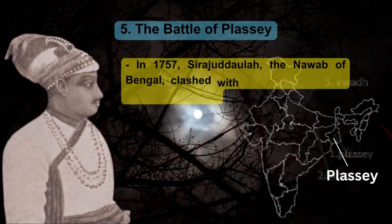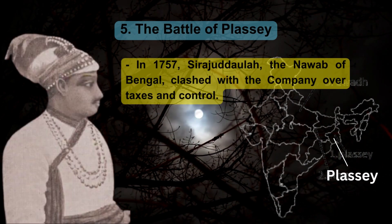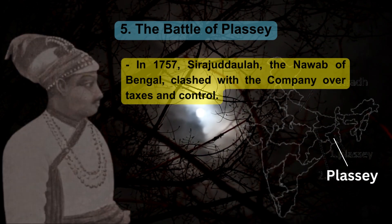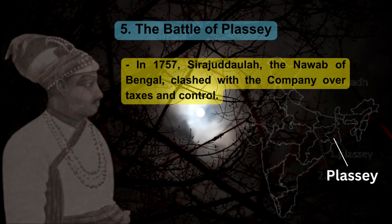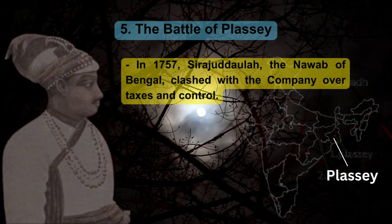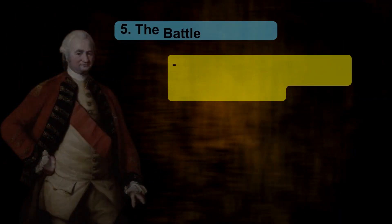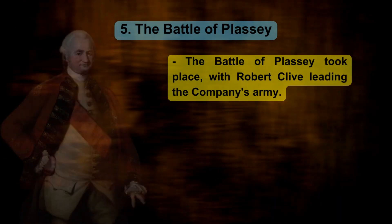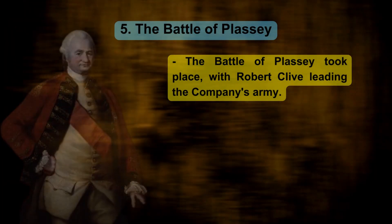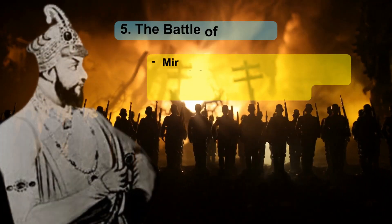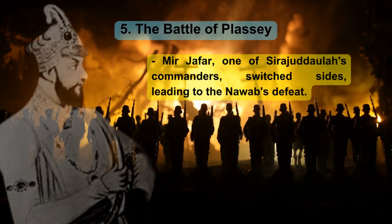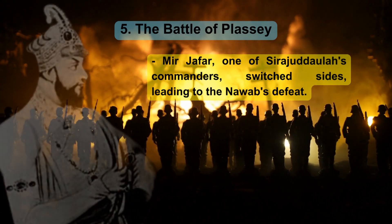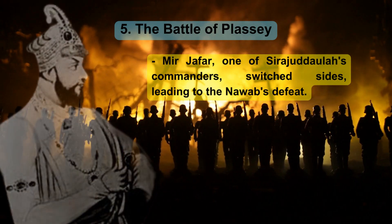The Battle of Plassey. In 1757, Sirajud Daulla, the Nawab of Bengal, clashed with the company over taxes and control. The Battle of Plassey took place, with Robert Clive leading the company's army. Mir Jafar, one of Sirajud Daulla's commanders, switched sides, leading to the Nawab's defeat.